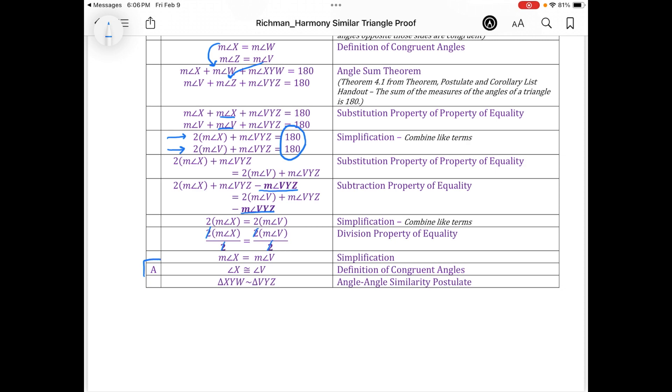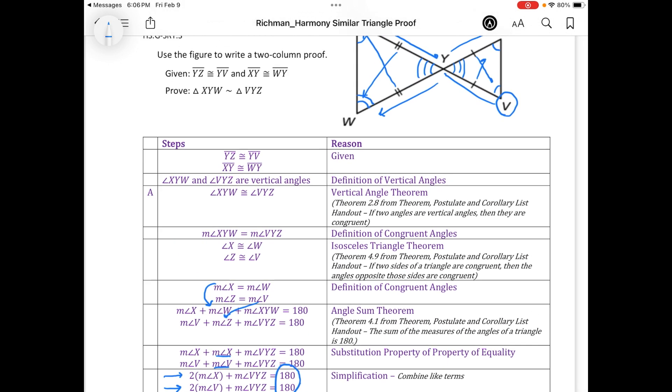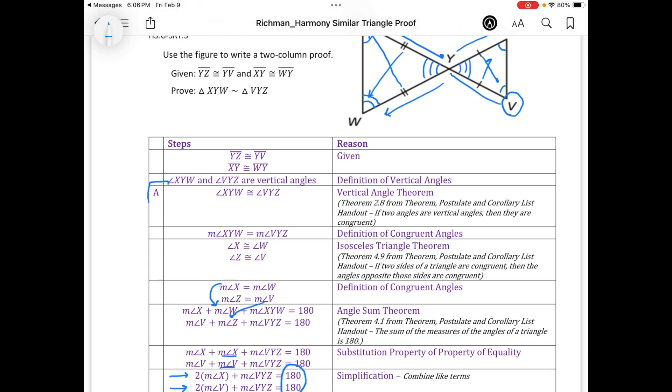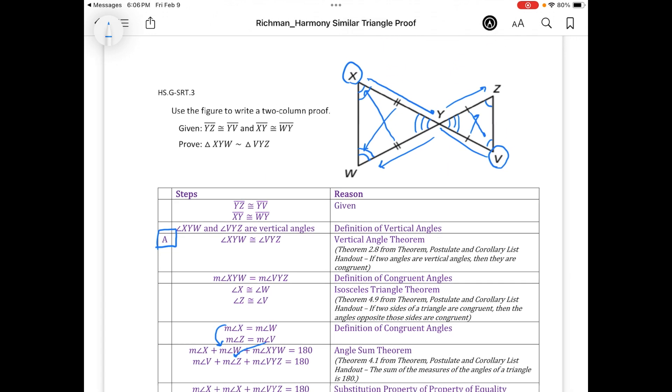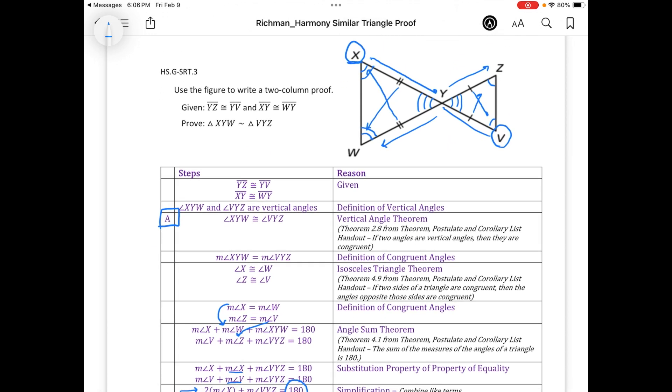So this gave me my second angle. We had already found our first angle up here with that vertical angle. And now that I know that my corresponding angles are equivalent to one another.